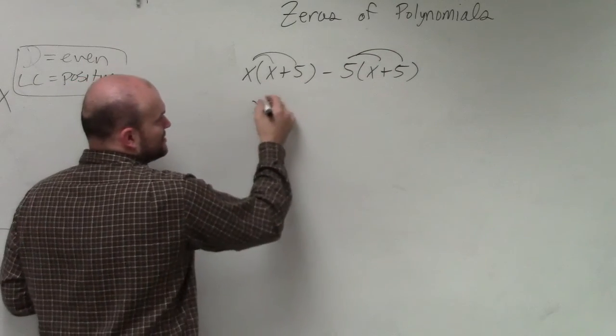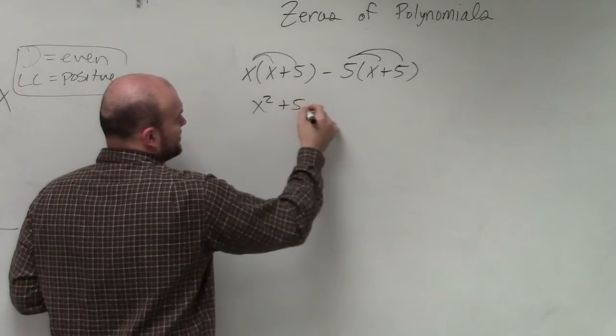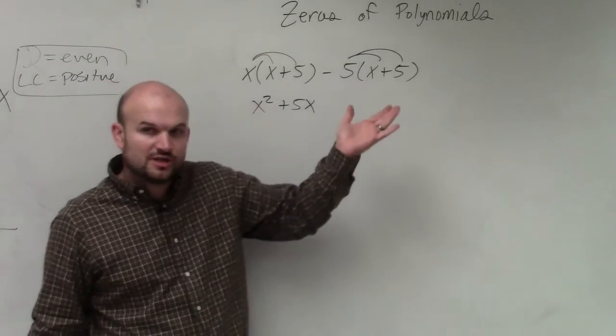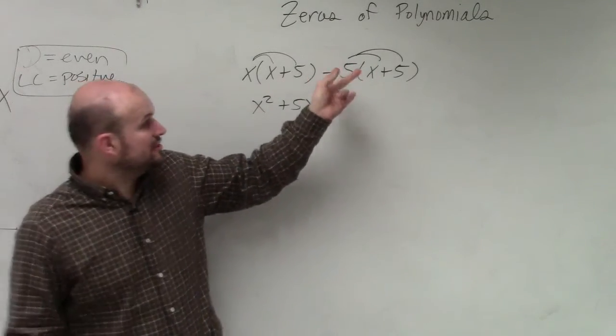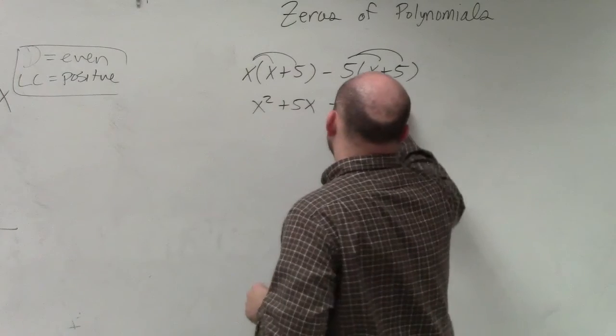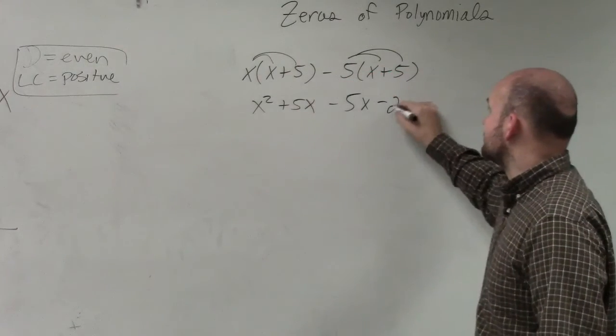So x times x is x squared. x times 5 is positive 5x. Over here, just note that this is a negative 5. So negative 5 times x is negative 5x. Negative 5 times 5 is negative 25.